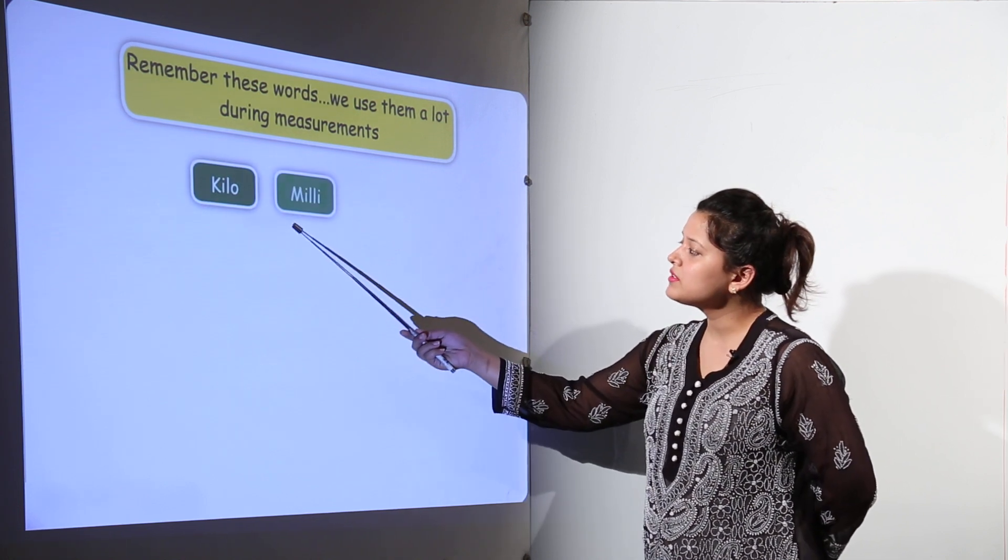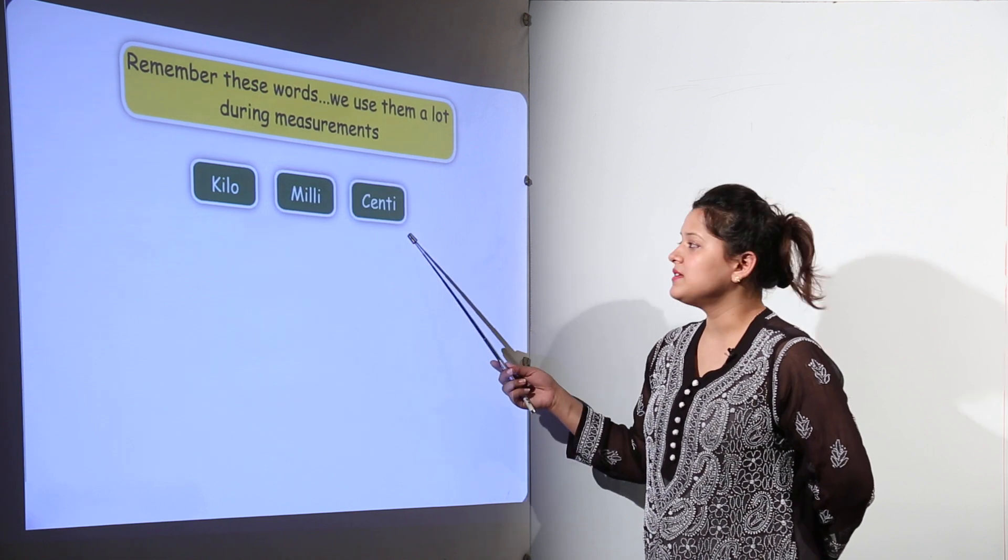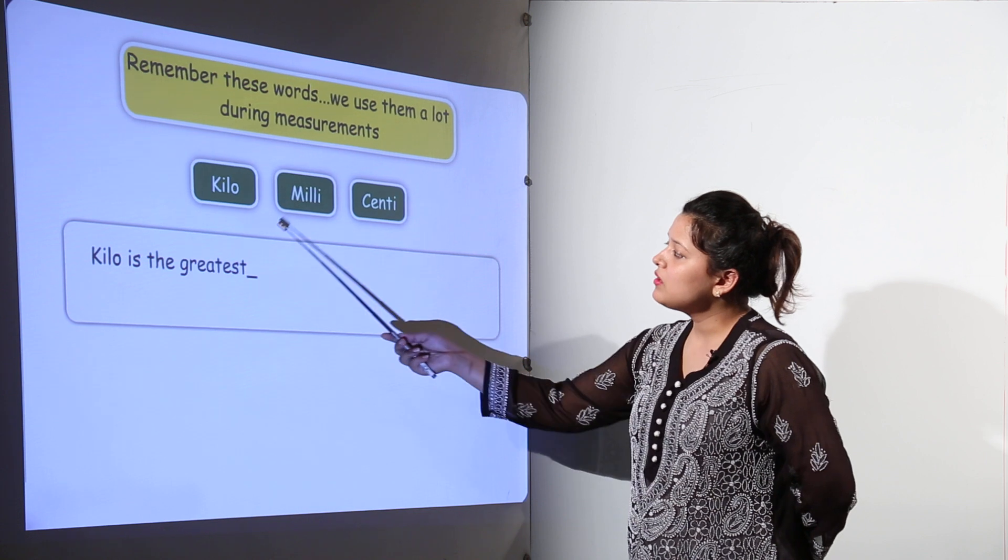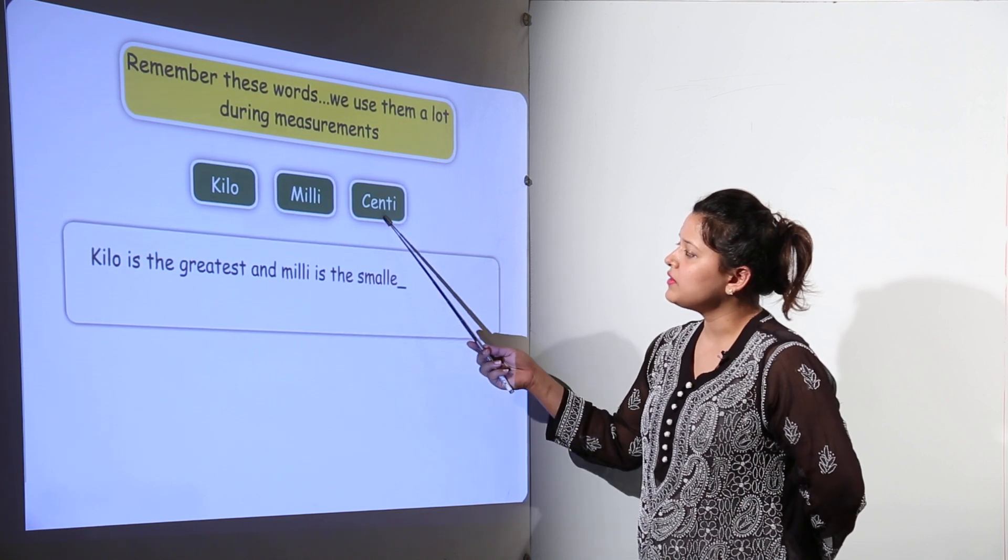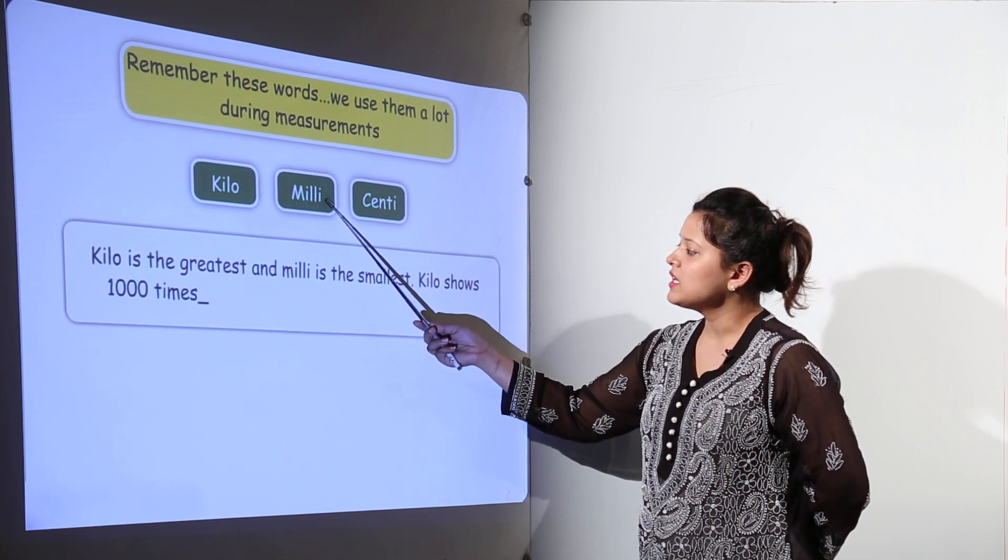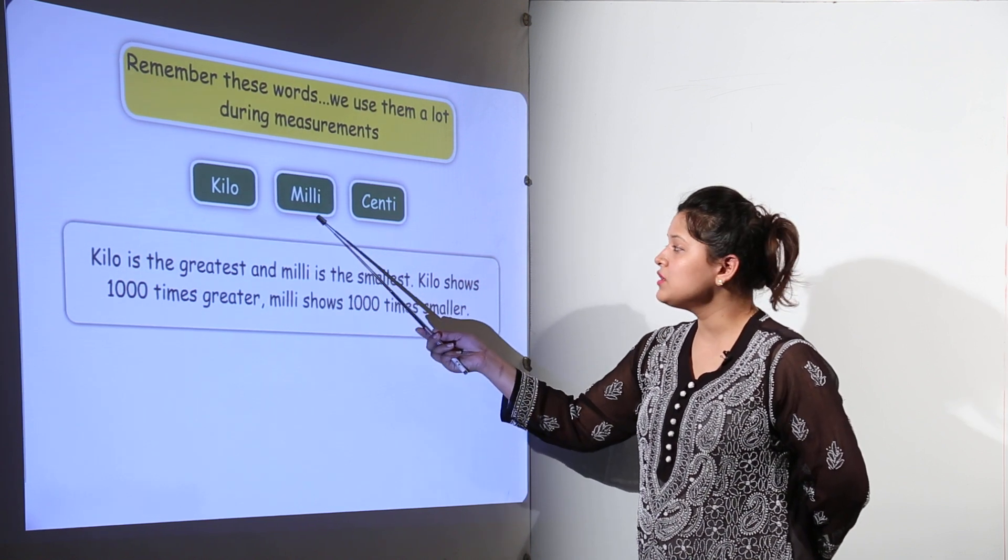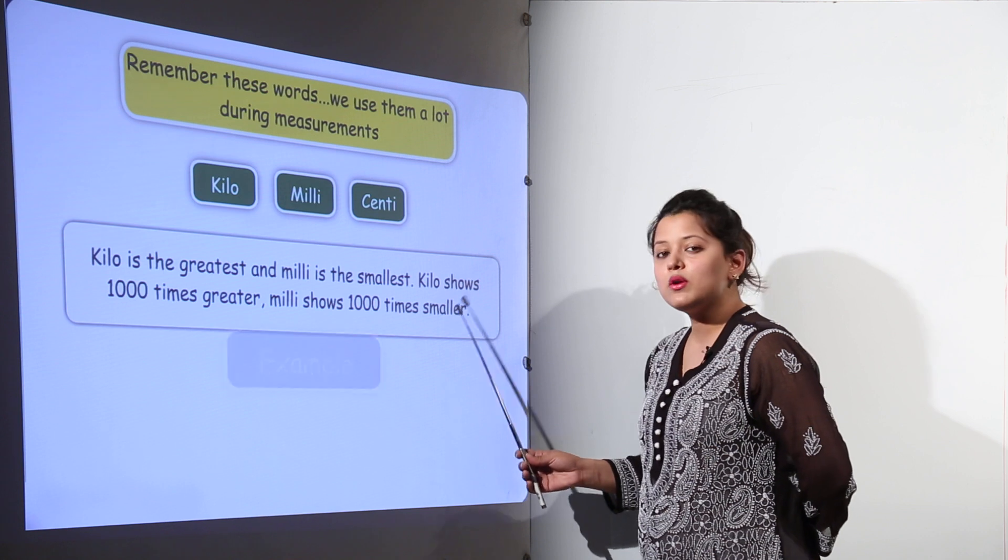That is kilos, milli and centi. What are the meaning of these three words? Kilo is the greatest out of the three and milli is the smallest. Kilo will be showing one thousand times greater value and milli shows one thousand times smaller value.